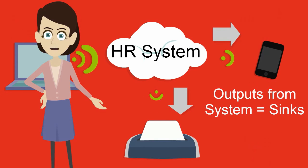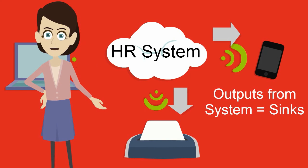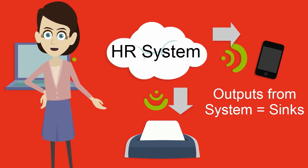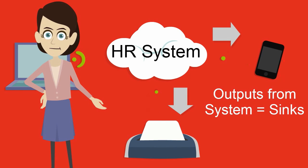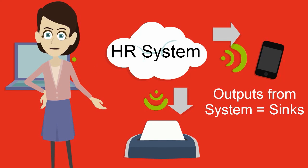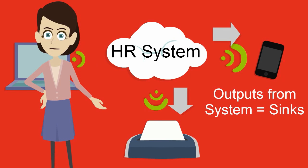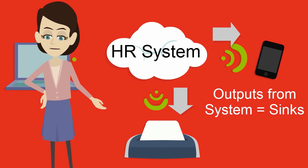Sinks are the outputs that we expect our system to provide. These could be technical interfaces or reports that manually inform and support other processes. In our example of the human resources system, this could be a technical data interface where the human resources system sends building access information to the property management system as an output or sink.